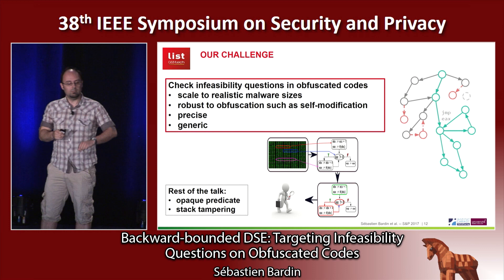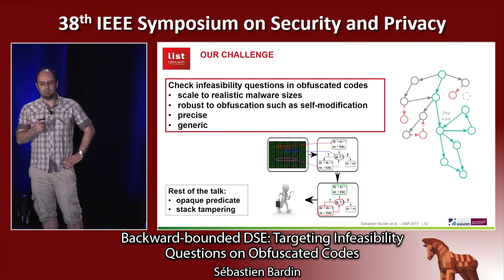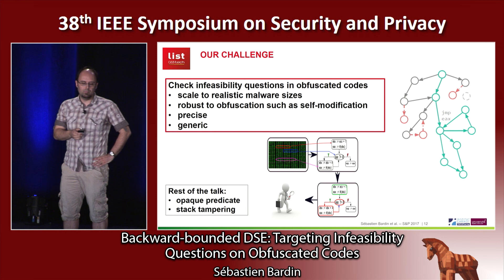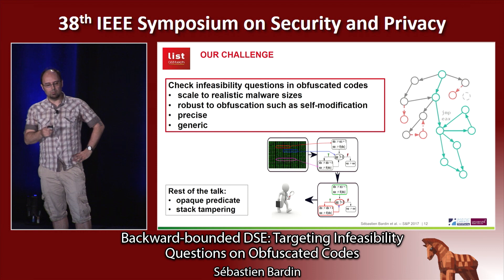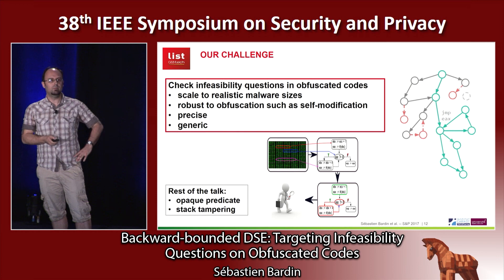So this is our challenge: we want to design tools to check the infeasibility question in obfuscated code. We want to scale to realistic malware size, be robust to obfuscations such as self-modification, be precise, and be generic so that we can handle several kinds of infeasibility questions. In the rest of the talk, I will focus on opaque predicates and stack tampering, but the technique can apply to many other obfuscation schemes.